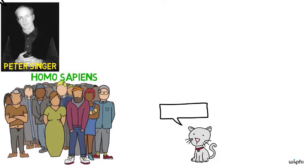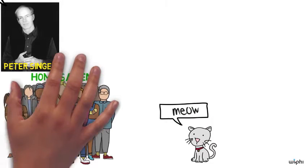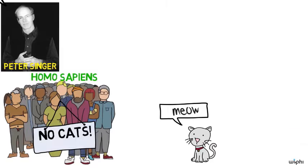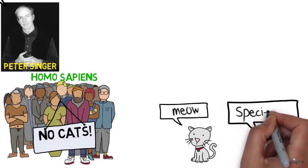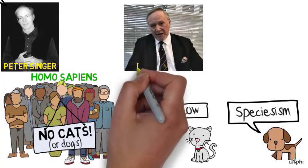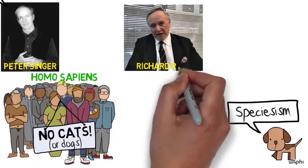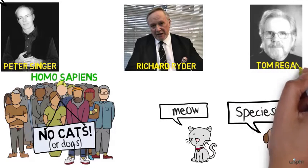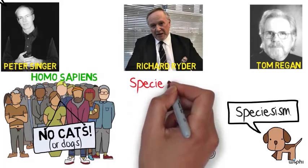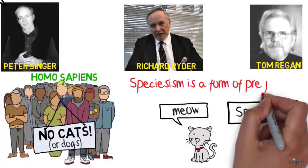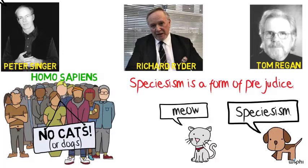But if we say that all and only human beings have moral status for that reason, then how are we any different at all from racists or sexists or anybody else who discriminate against others solely on the basis of membership in a particular biological category? For that reason, Richard Ryder, Peter Singer, Tom Regan, and many other philosophers have argued that speciesism is wrong for the same reason that racism and sexism are. They are all forms of prejudice in favor of one group over another group solely on the basis of membership in a particular biological category.